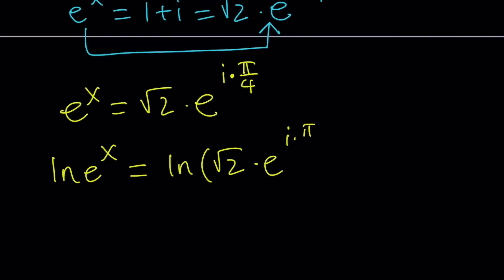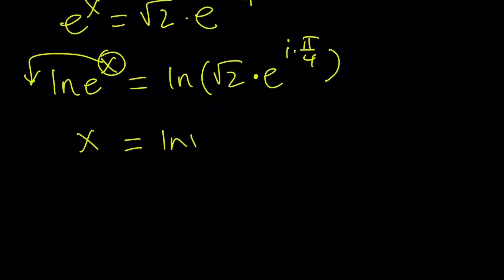We're going to be using properties of logs here which says ln e to the power x is the same thing as x. And this can be separated because we have the rule for logs: if you have log a b it can be written as log a plus log b. This is true for any base. We didn't specify it but it's true for all bases including the natural log.